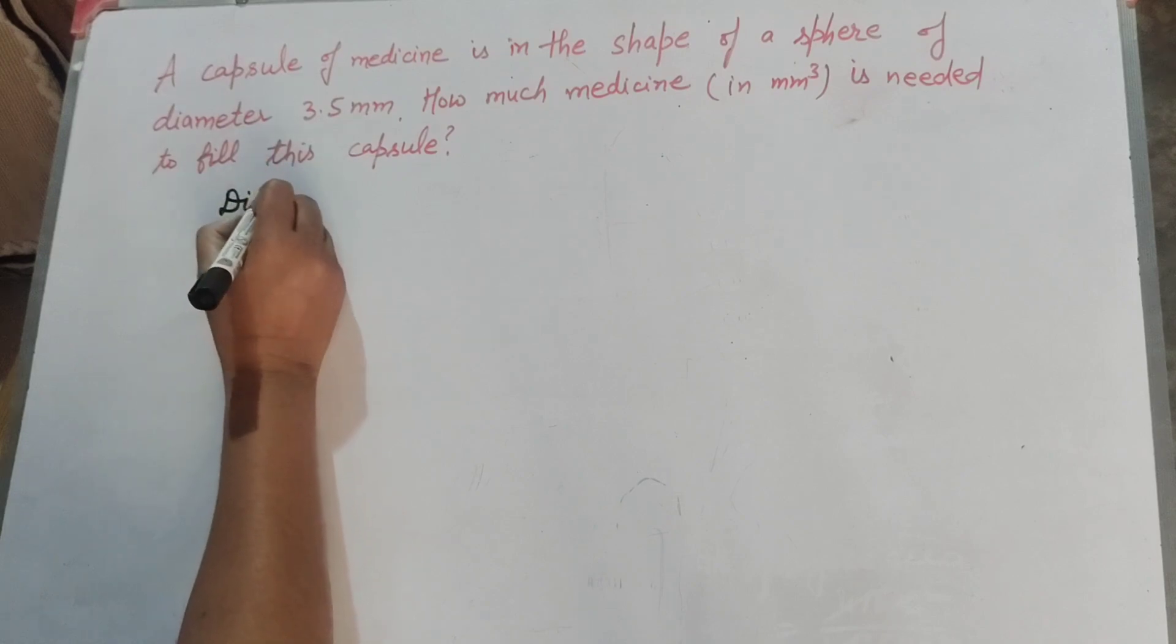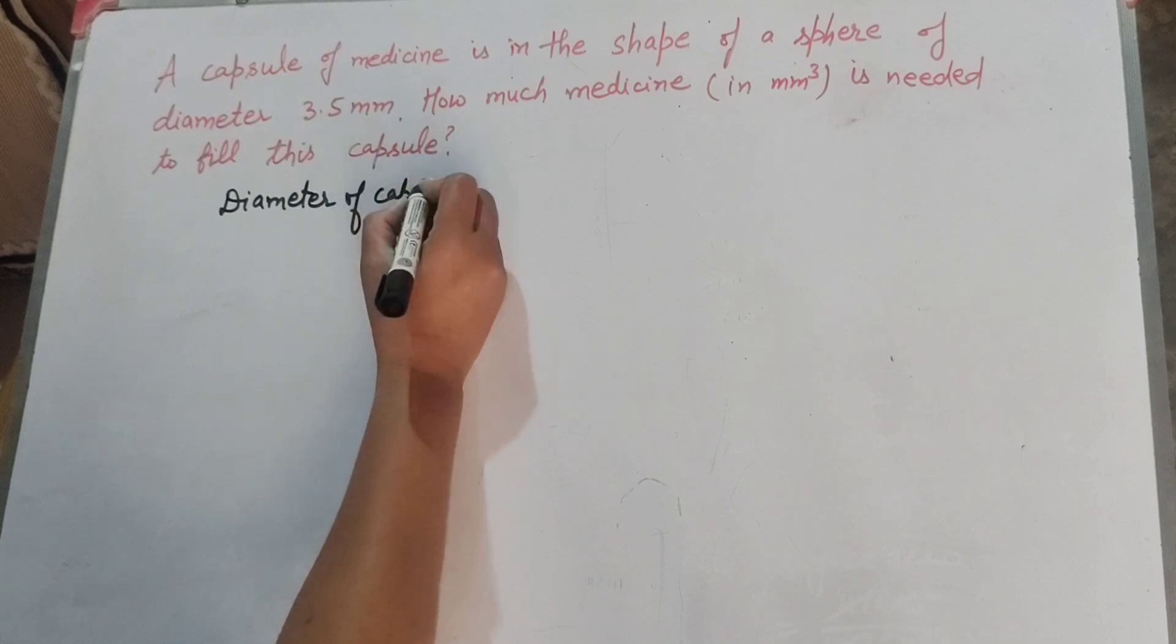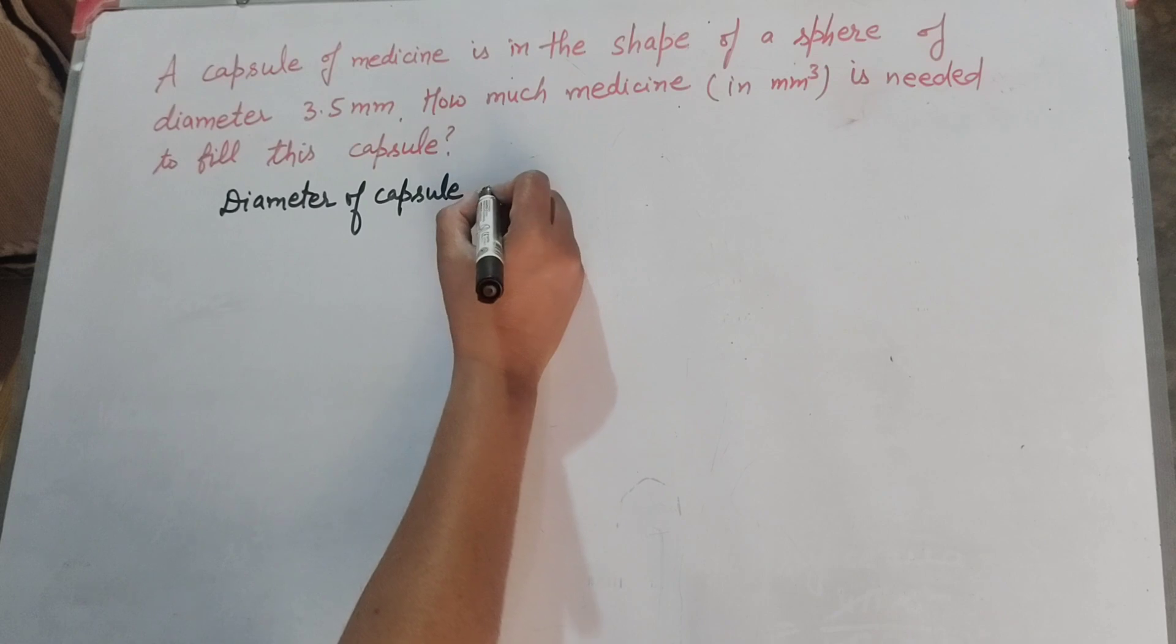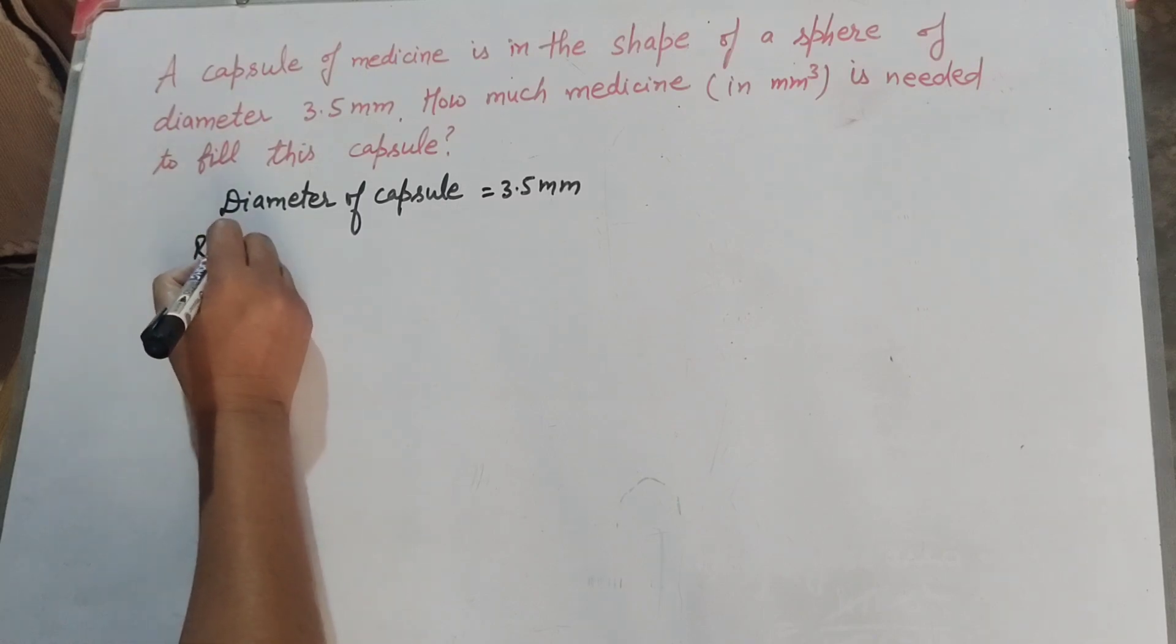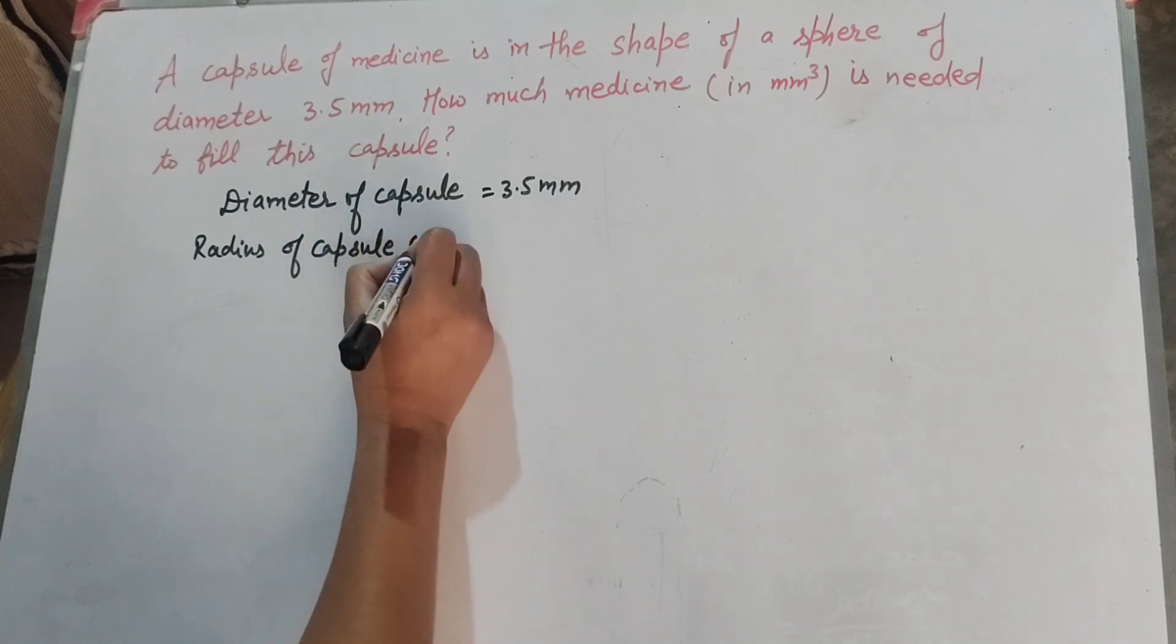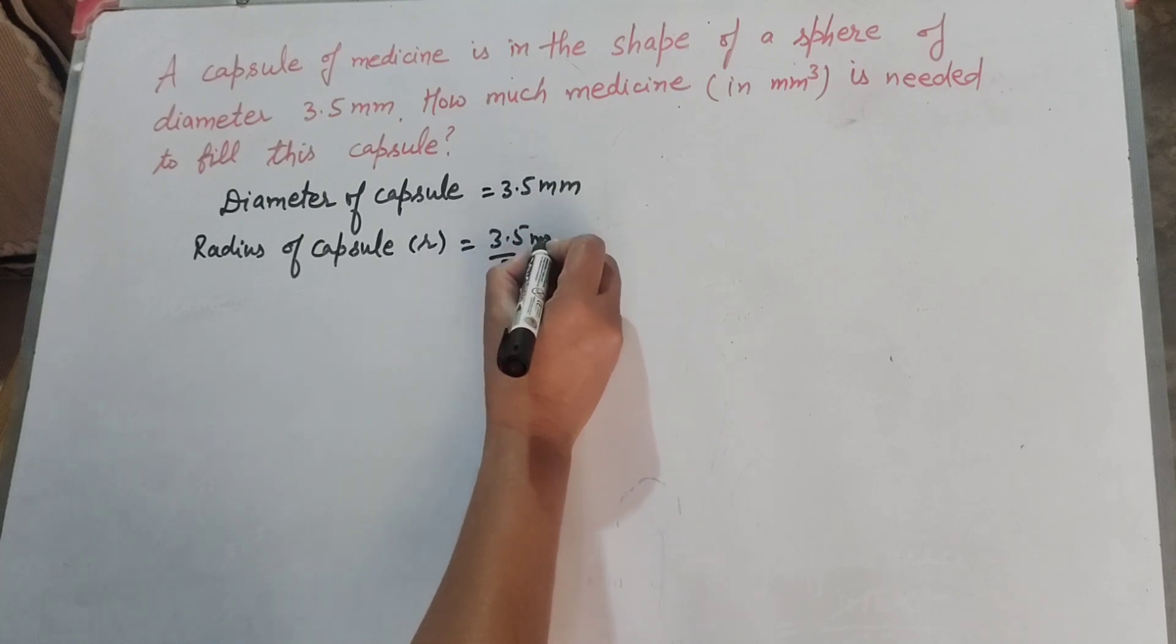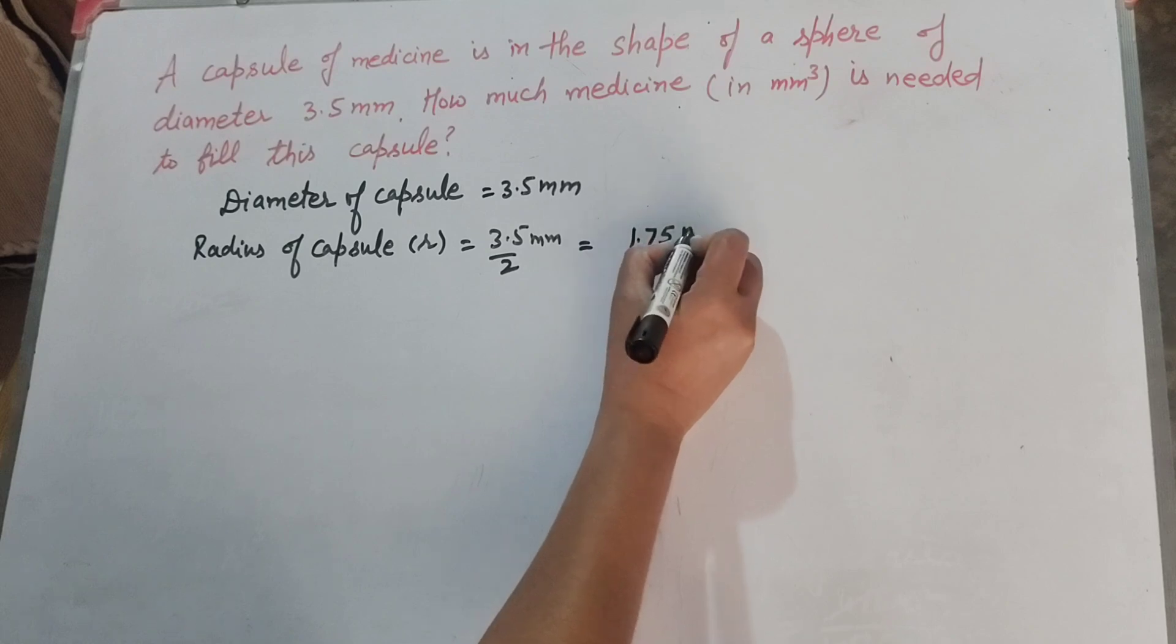In this question, given is the diameter of capsule, which is equal to 3.5 mm. Now we find the radius of capsule. Radius of capsule is equal to diameter divided by 2. Diameter is 3.5, so 3.5 divided by 2 equals 1.75 mm.